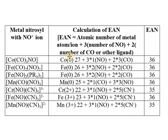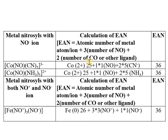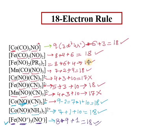Now you can easily calculate and apply the EAN and 18-electron rules for nitrosyls, since we have already applied the EAN rule to metal carbonyls. This lecture covered the EAN rule and 18-electron rule for metal nitrosyls. In the next lecture, we will discuss the vibrational spectra and applications of metal nitrosyls.